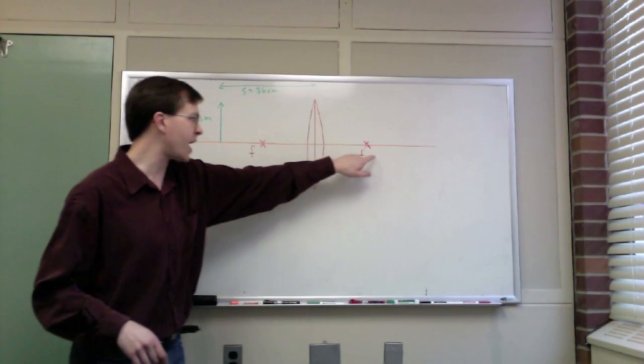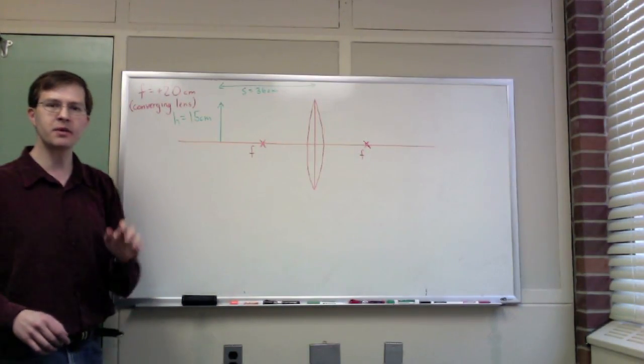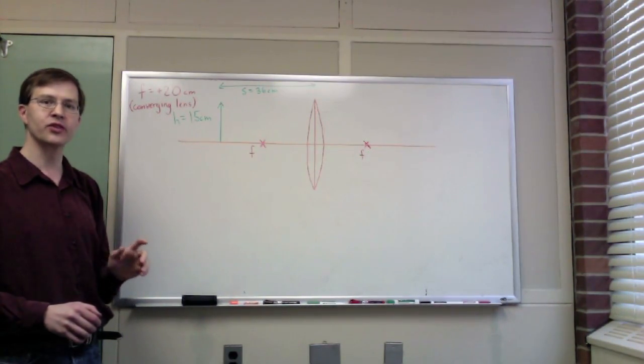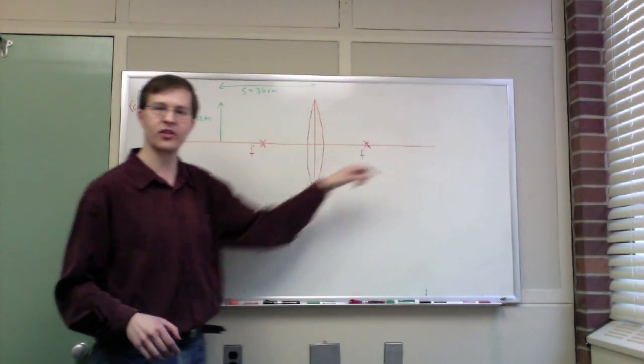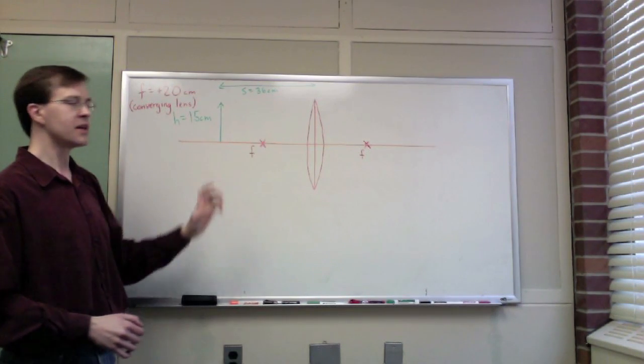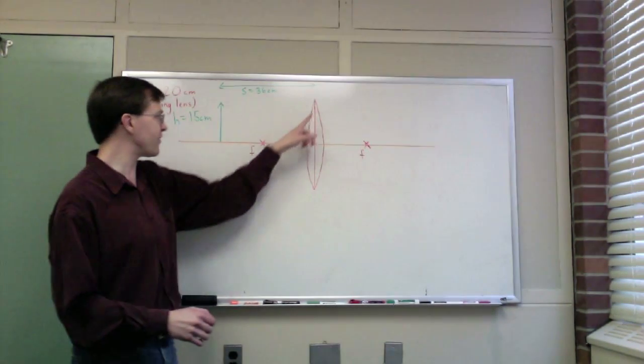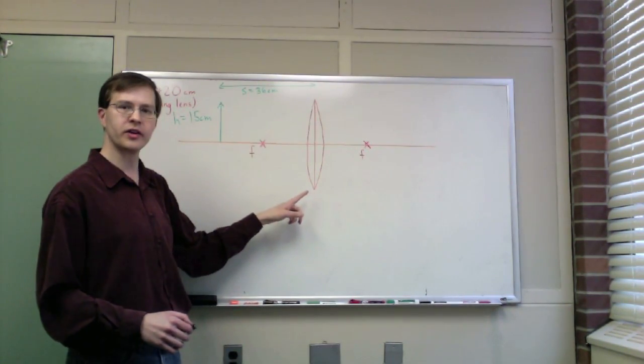I'm considering here a converging lens with a focal length of 20 centimeters. I've put an object 36 centimeters away from the lens and it has a height of 15 centimeters to begin with. I've labeled the focal points on each side of my converging lens and let me take a moment to remind you of the essential things in ray tracing.